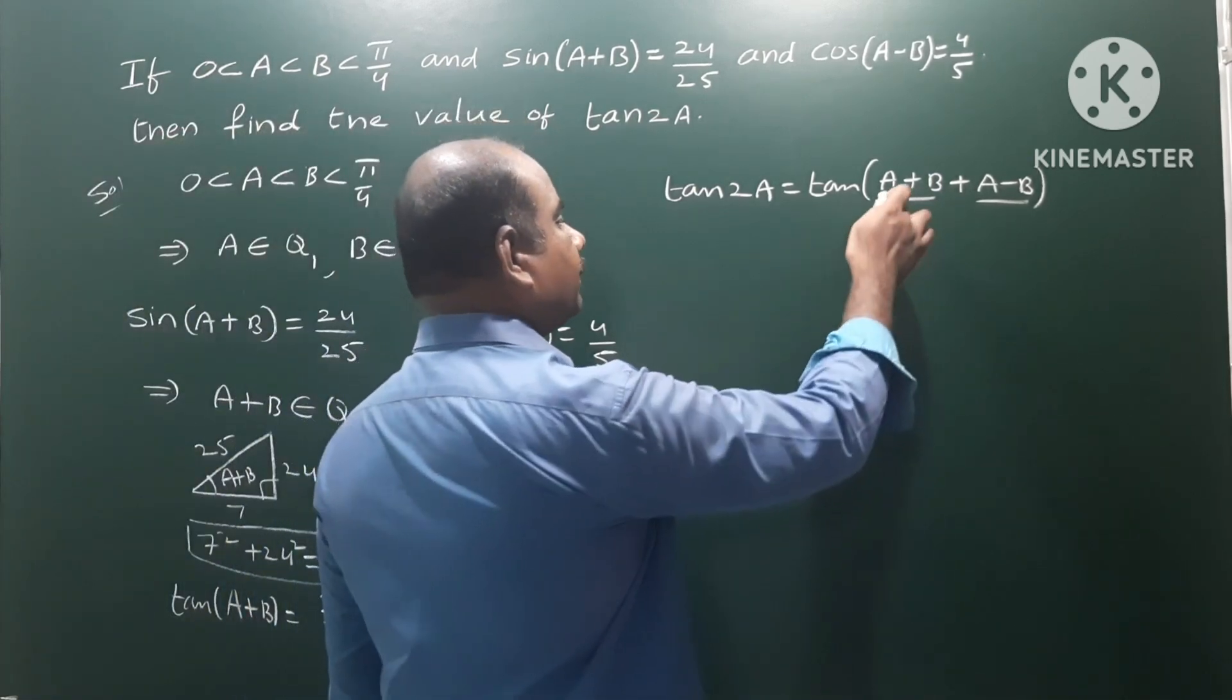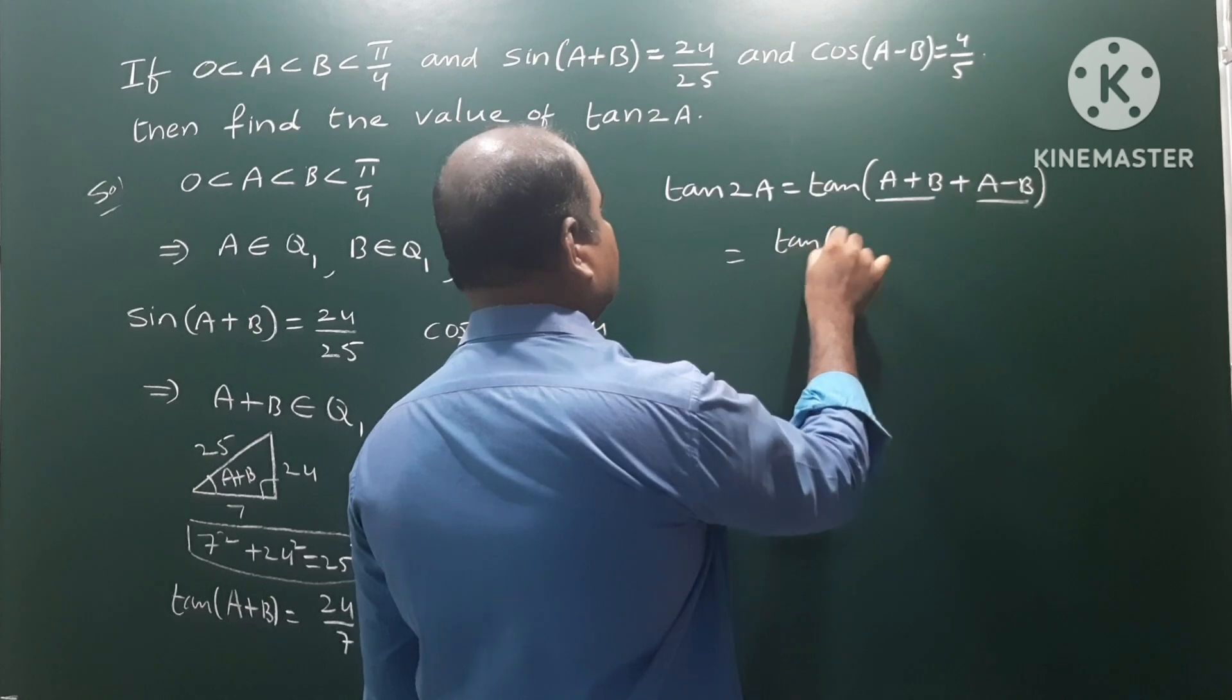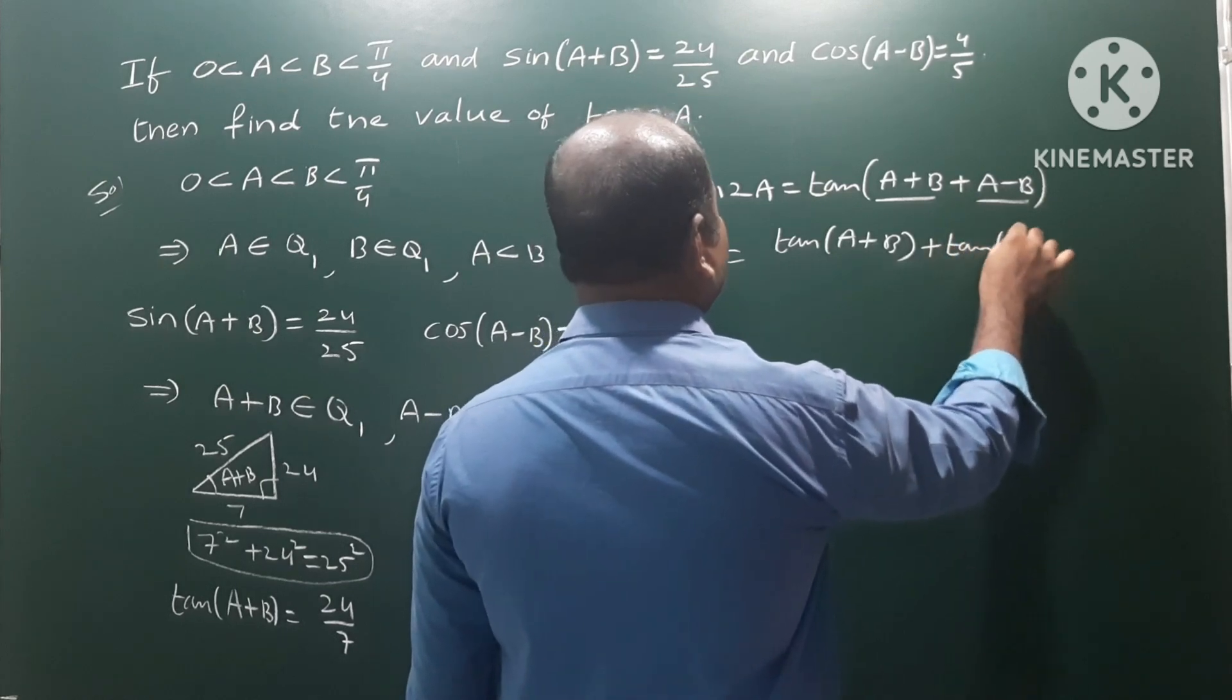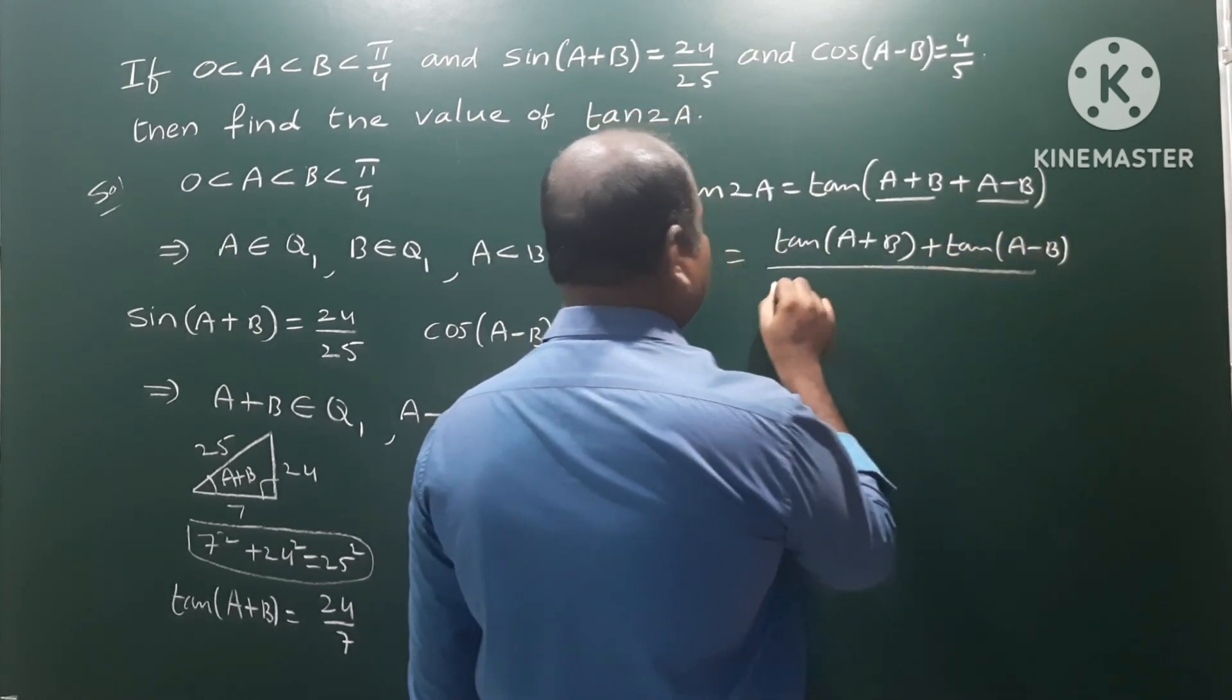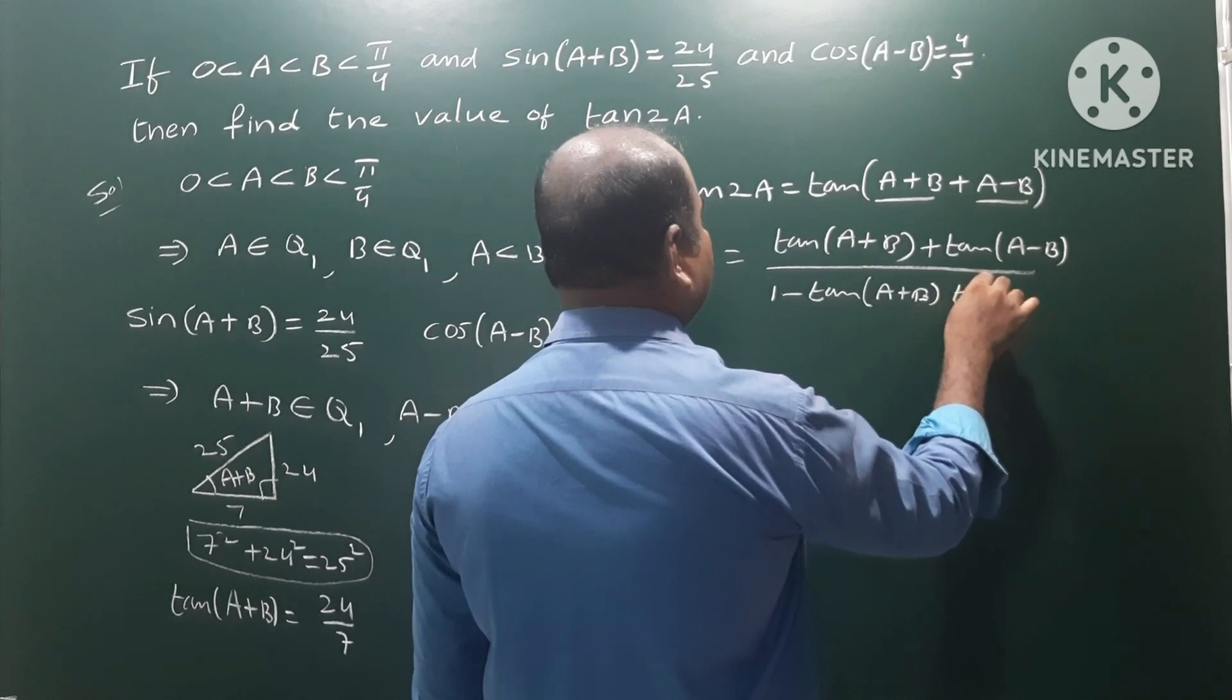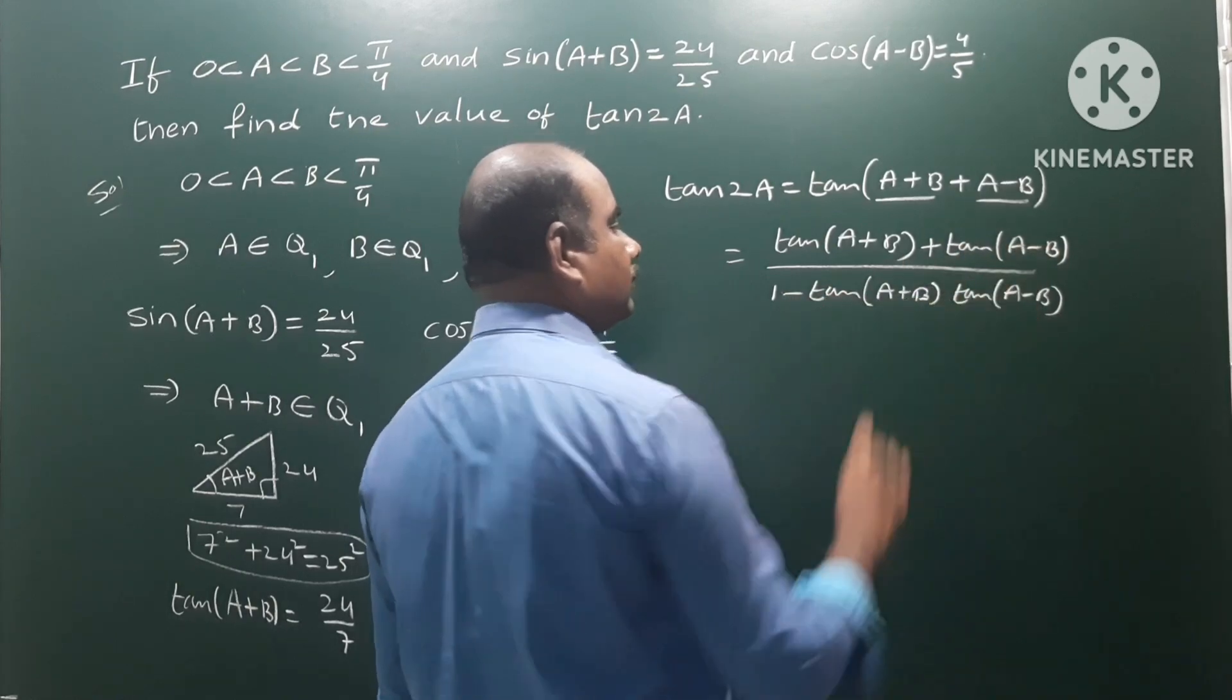Now applying the formula: tan 2A = [tan(A+B) + tan(A-B)] / [1 - tan(A+B) × tan(A-B)]. This is the tan(P+Q) formula where P is A+B and Q is A-B.